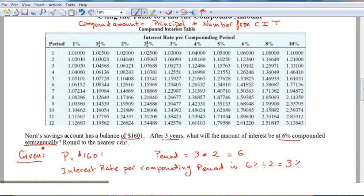...so three times two will give us six, so they will be compounded six times in those three years. The interest rate per compounding period is 6%, and you divide that by two because it's semi-annually, which is 3%.